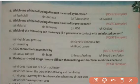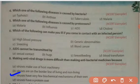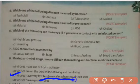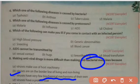Making antiviral drugs is more difficult than making antibacterial medicines because viruses have very few biochemical mechanisms of their own. Viruses are not true cells, so they have very few biochemical mechanisms. Since drug-making relies on targeting biochemical mechanisms, it is very tough to make antiviral drugs. Bacteria are true cells with many biochemical mechanisms that we can interfere with to eradicate them from the body.